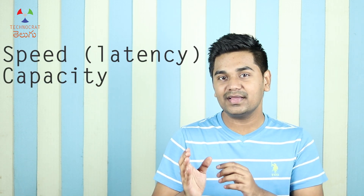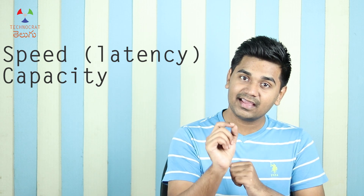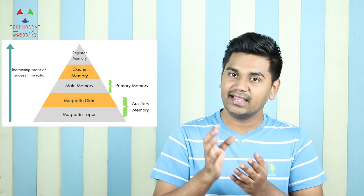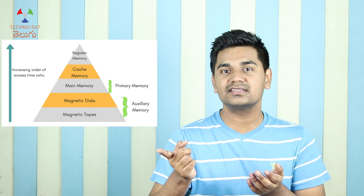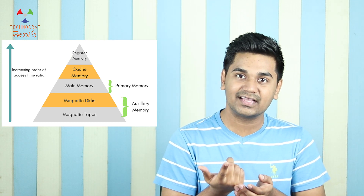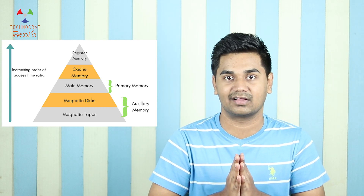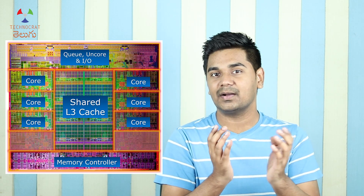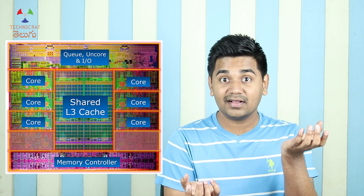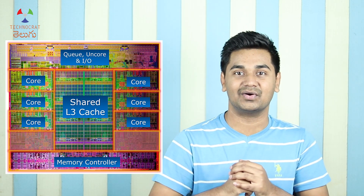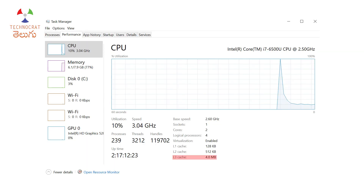In our electronic gadgets, the storage devices include internal storage, flash storage, RAM, cache memory, hard disk drive, and solid state drive. You can compare the speeds and capacity of all these storage devices. Cache memory can be integrated into the CPU cores, with capacities like 4MB or 8MB.